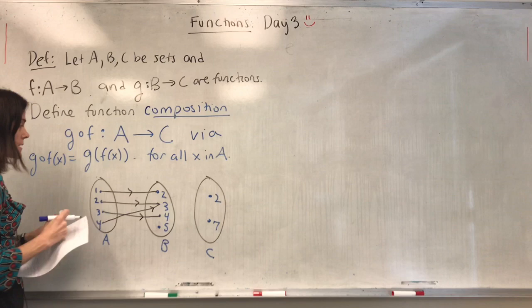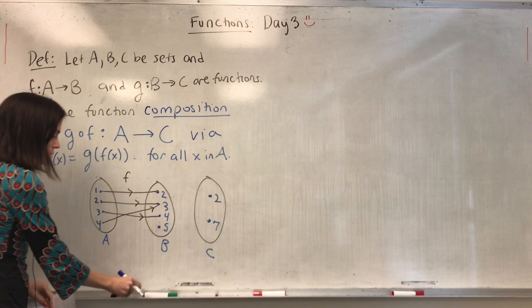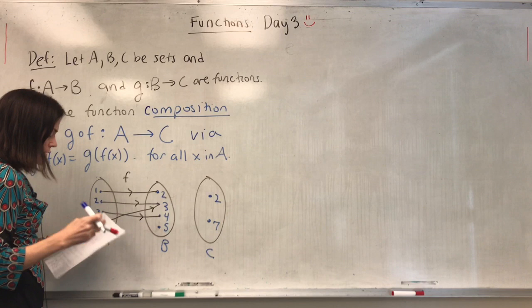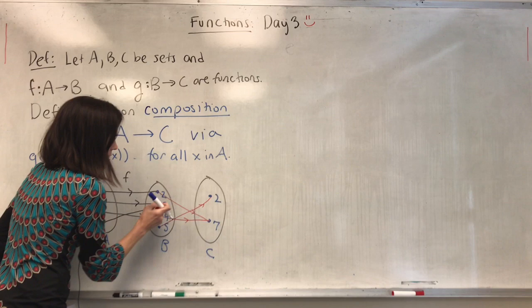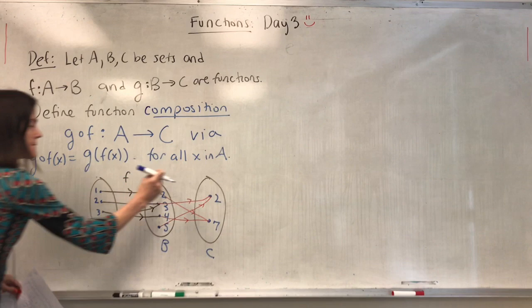That is F. And then G — I'll do this one in red — G sends 2 and 4 to 7, and 5 and 3 to 2.